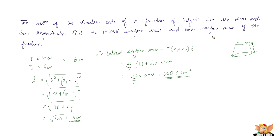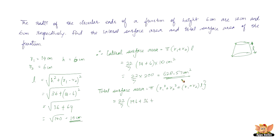The total surface area is given by π × (r1² + r2² + (r1 + r2) × l). We've already found l = 10. Substituting: (22/7) × (196 + 36 + 200) = (22/7) × 432 = 1357.71 cm². So the total surface area of the given frustum is 1357.71 cm².